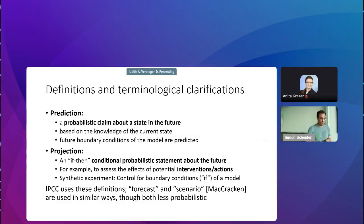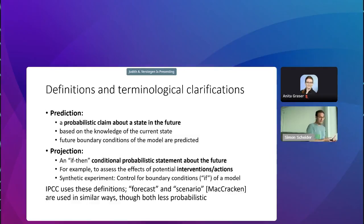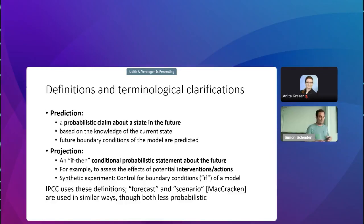We think the reasons have to do with terminological confusion, namely between two terms: prediction and projection. A prediction is a probabilistic claim about a state in the future based on knowledge of the current state and the future boundary conditions of the model. A projection, in contrast, is an if-then conditional probabilistic statement about the future — for example, to assess the effects of potential interventions or actions — a synthetic experiment where you control the boundary conditions. The IPCC uses exactly these two definitions, and in climate science these distinctions are sometimes also called forecast and scenario.